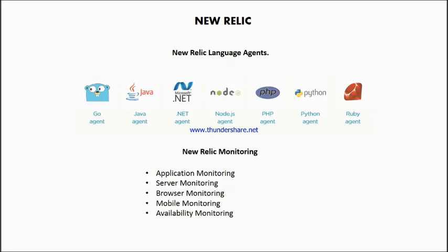New Relic has Application Monitoring, used for code-level monitoring — it digs into your code to find errors and other issues. Second is Server Monitoring, which is about finding how much disk space, RAM, and CPU your application uses. Third is Browser Monitoring — it uses the lightweight JavaScript agent integrated into end-user browsers, so you can know about page load delays and manage front-end performance.